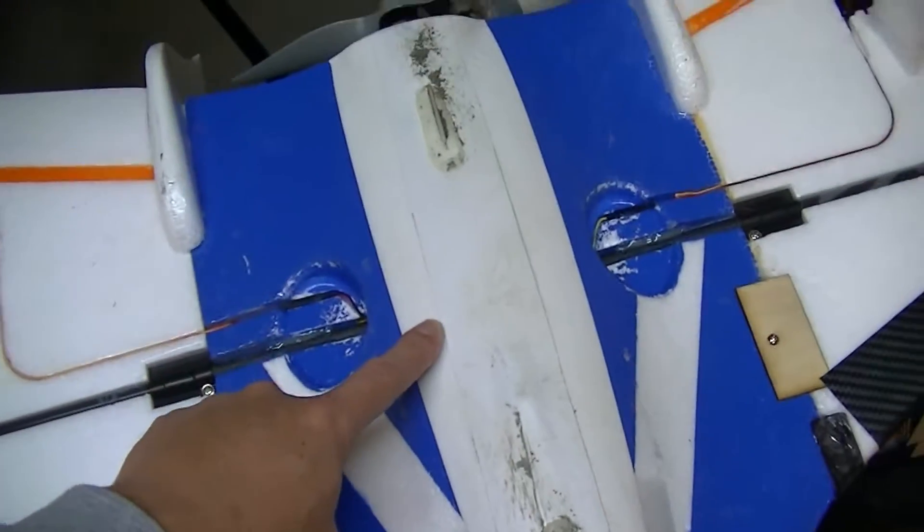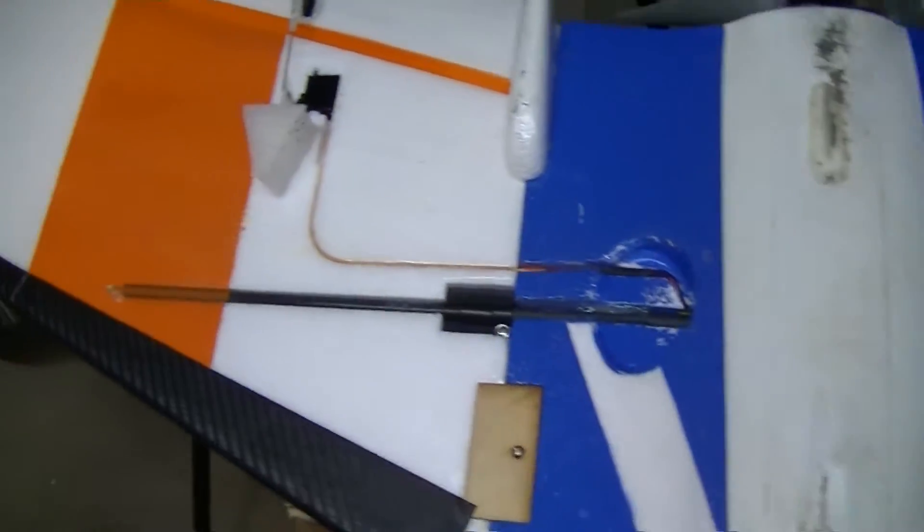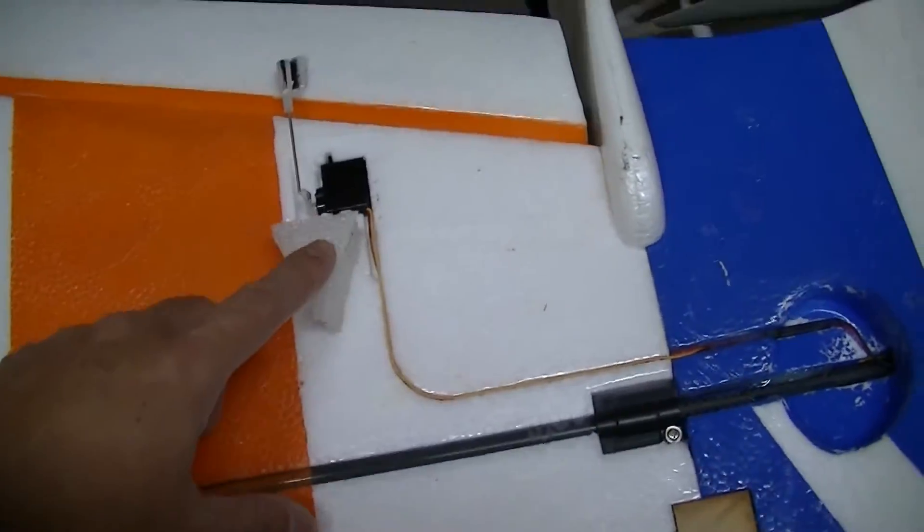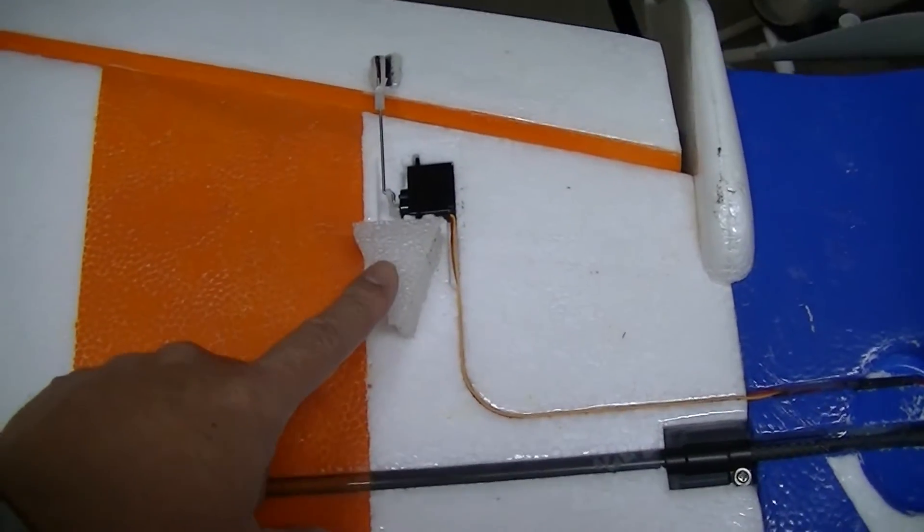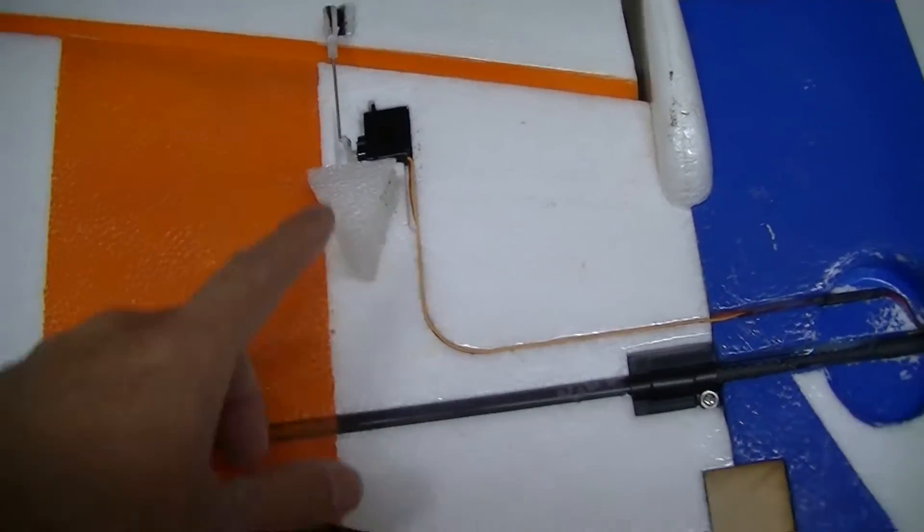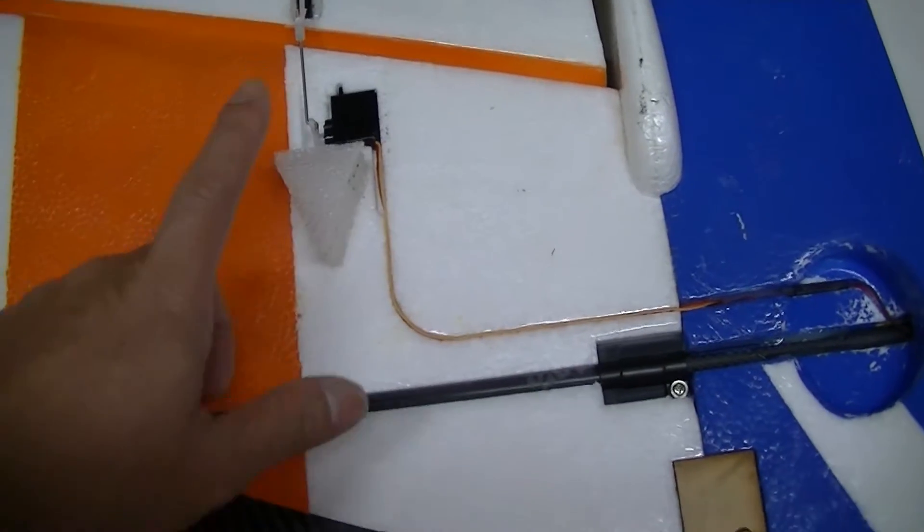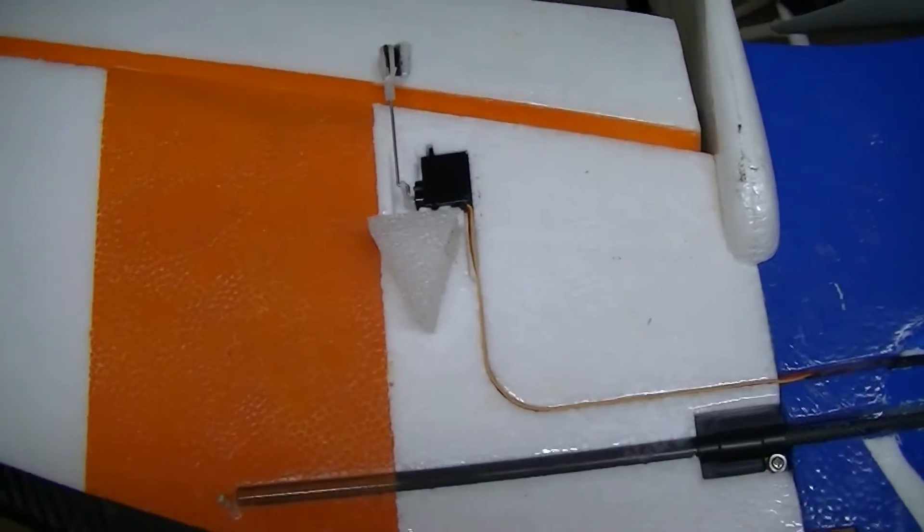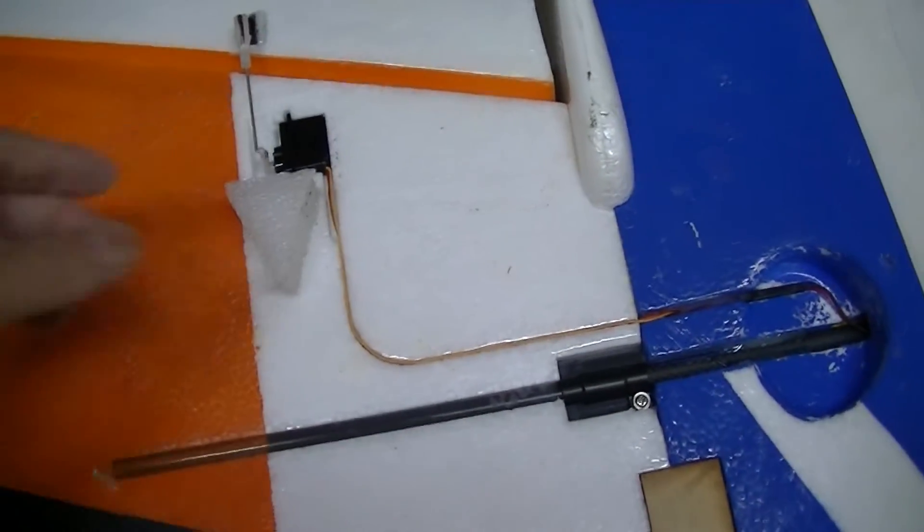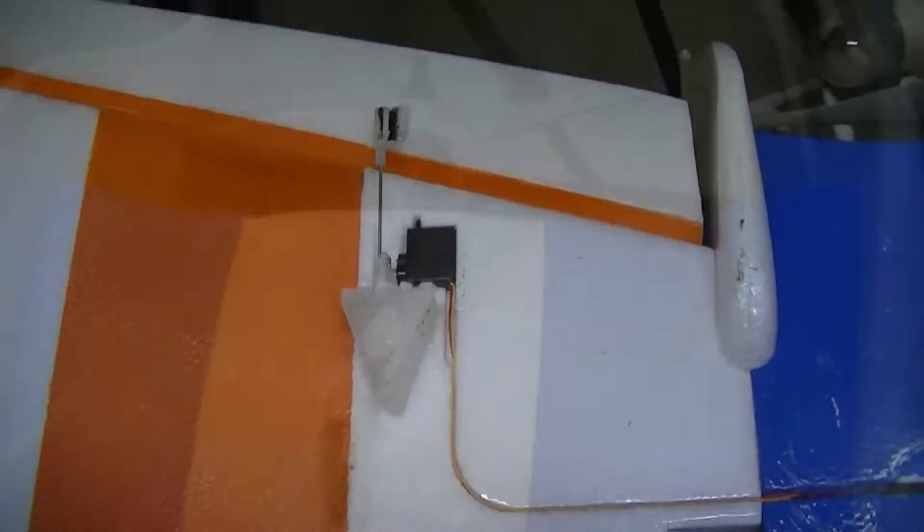I used to just use foam, cut it like this, and I did put the same type of foam on my old Phantom. This is to protect the control horn.